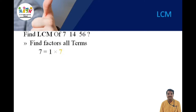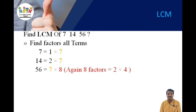The factor of 7 is 1 multiplied by 7. The factor of 14 is 2 multiplied by 7. The third number is 56, and the factor of 56 is 7 multiplied by 8. Again, the factor of 8 is 2 multiplied by 4, so the factor of 56 is 7 multiplied by 2 multiplied by 4.